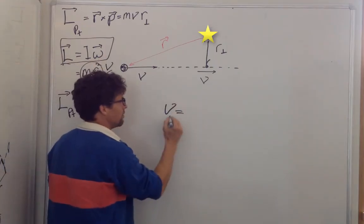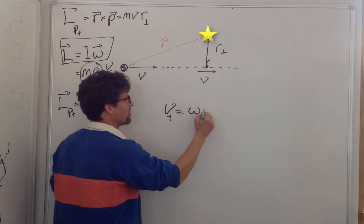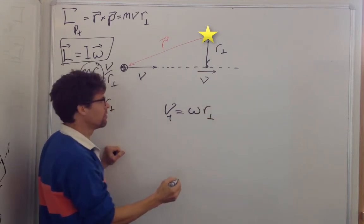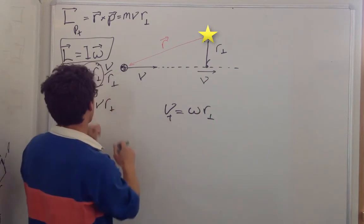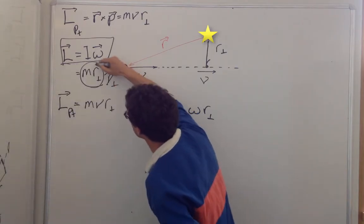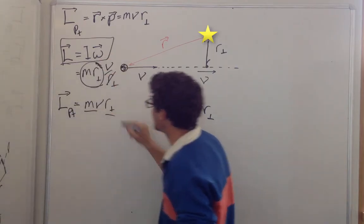I know v tangential is equal to omega times r perpendicular. So omega is just v divided by r, and I can see these cancel. And I end up with m v r perpendicular.